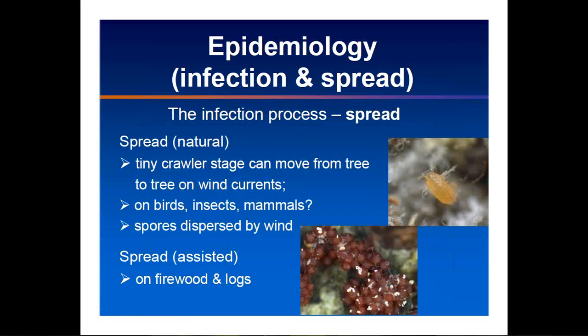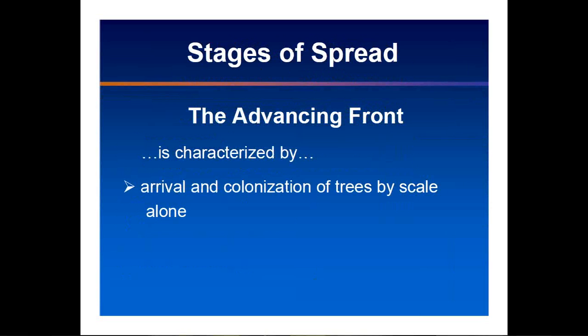How does it spread? First we need the crawlers. The crawlers arrive, infect those trees, and multiply rapidly. Those crawlers are moved by wind currents, by birds and insects. I always envision a nuthatch walking up and down an infected tree with scale on it — it gets onto their feet, they fly to the next tree and they're transporting it. Or even forest workers measuring DBH of those trees and getting scale on their sleeves and moving to the next tree. One of the big ways we figure this disease complex moves is through firewood and logs.